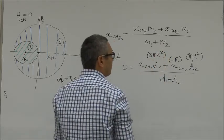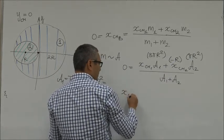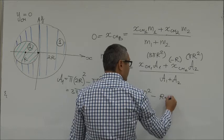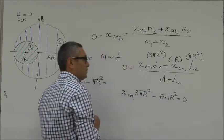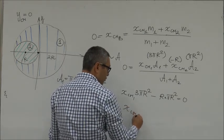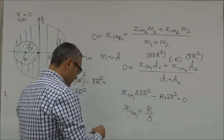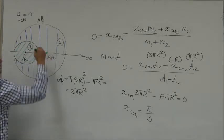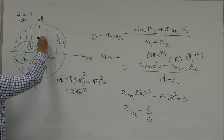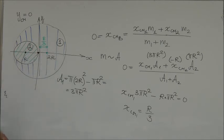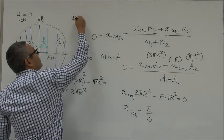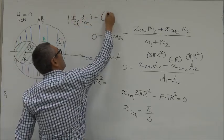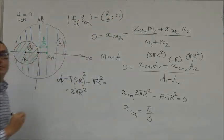XCM1 is what we're looking for. From the equation, we get XCM1 times 3 pi R squared plus (minus R) times pi R squared equals zero. So XCM1 is equal to R over 3. The center of mass of this blue figure is somewhere here, such that this distance is equal to R over 3. Finally, the X and Y coordinates of the center of mass of the first figure are R/3 and 0.